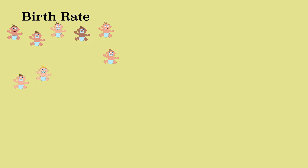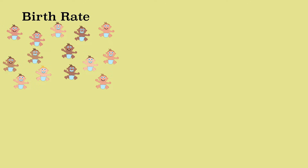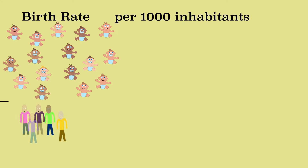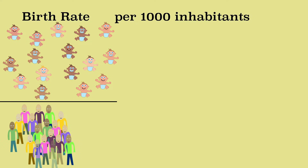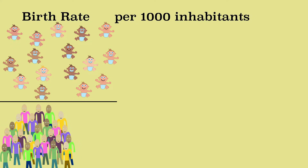The birth rate starts with the number of live births in a year. Because there are more people living in one country than in another, more children are probably born in that country. That is why we calculate the birth rate per thousand inhabitants, so that countries can be compared.